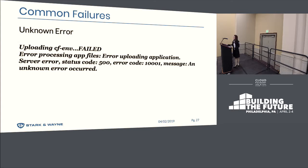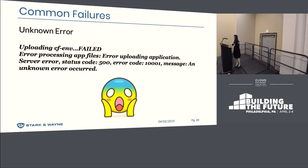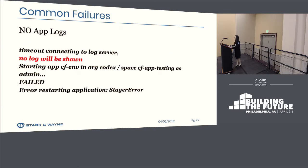This one looks most painful: you said we should use logs, we should use CF trace to see more information, but what if what it tells you is 'unknown error'? What are we going to do in that case? And then there's no app logs — you can't even connect to the log server. You told me to look at logs. What am I supposed to do?